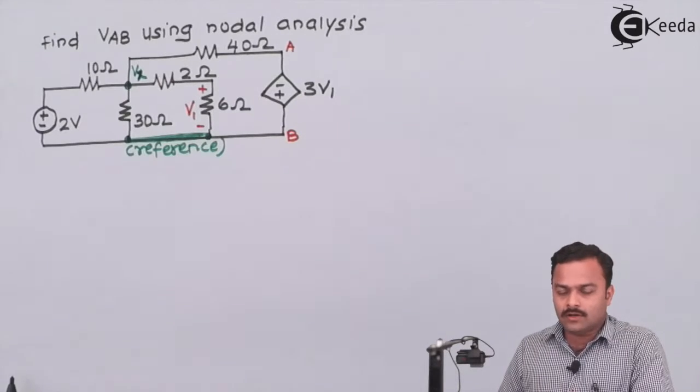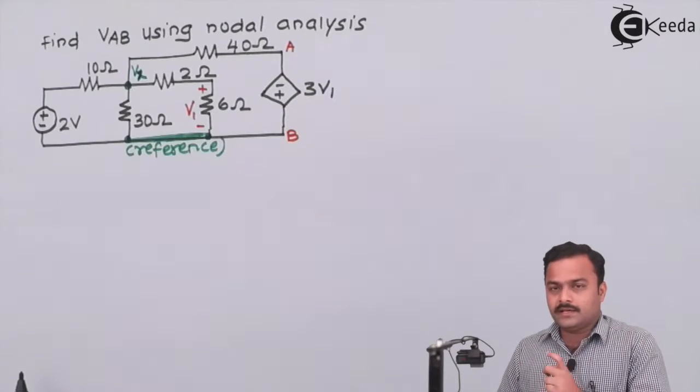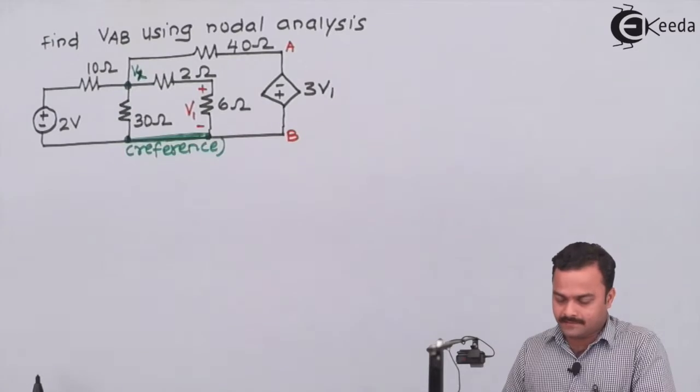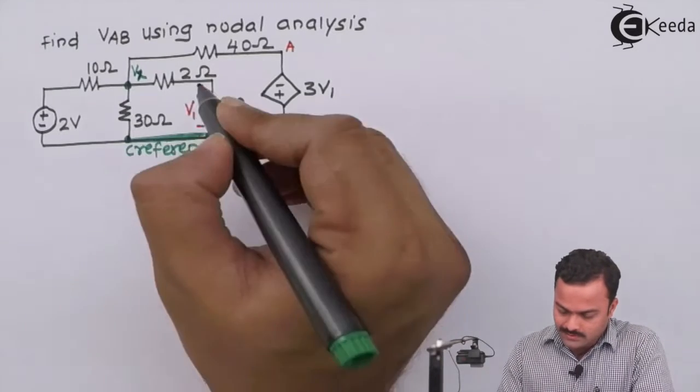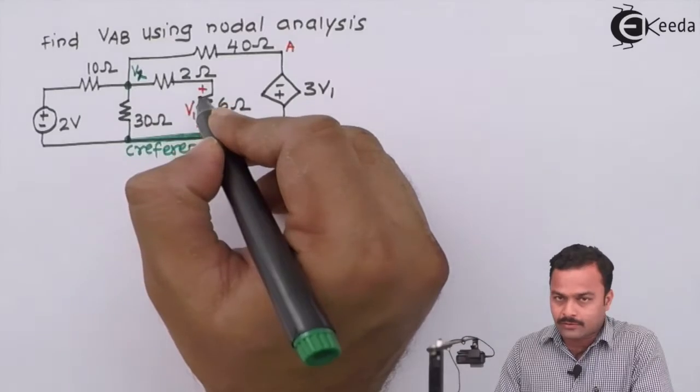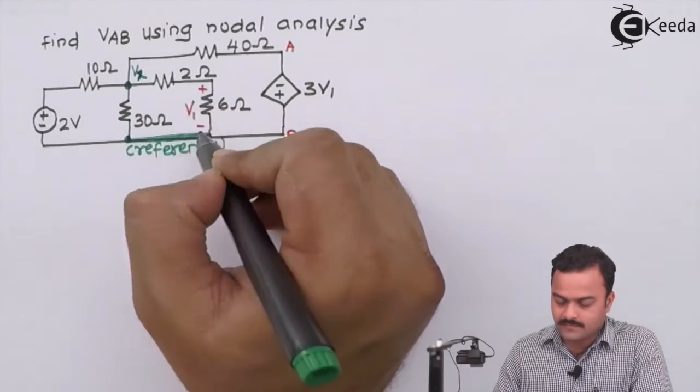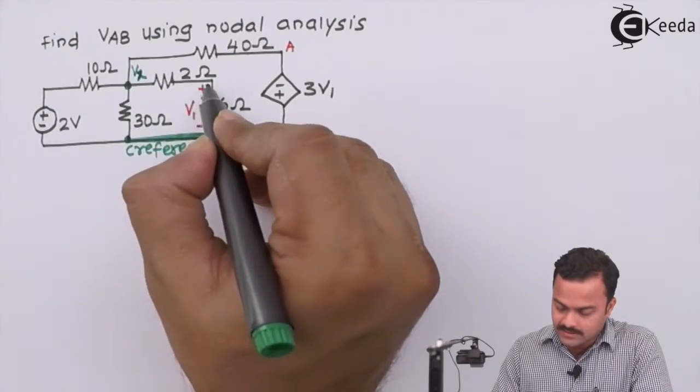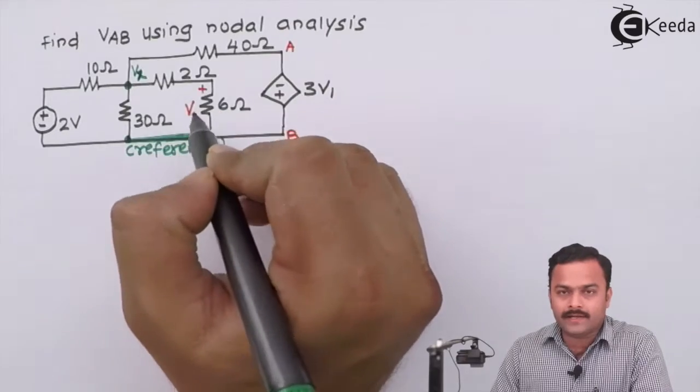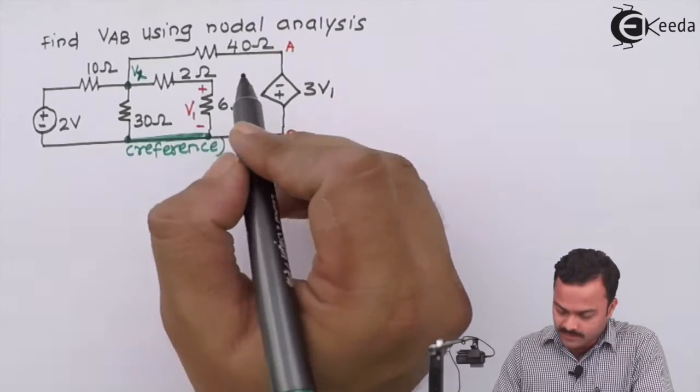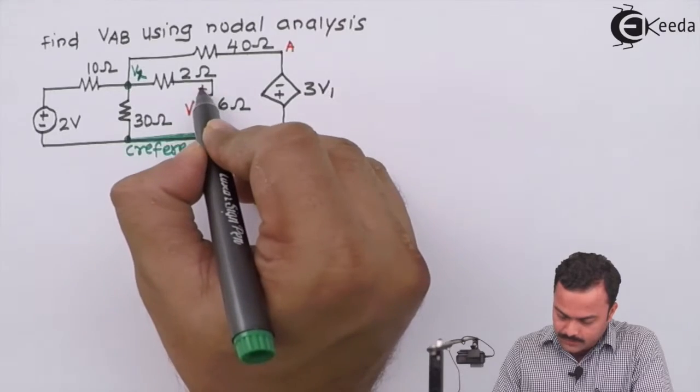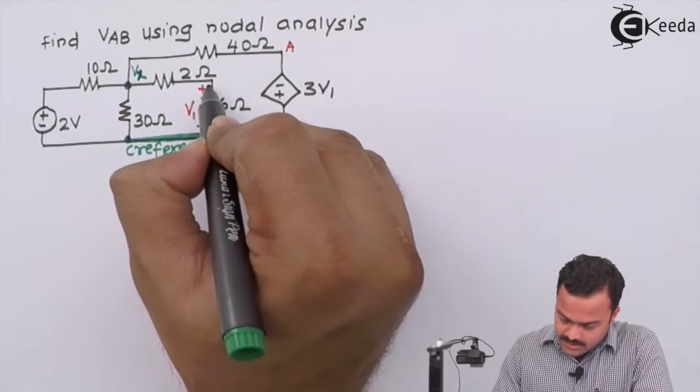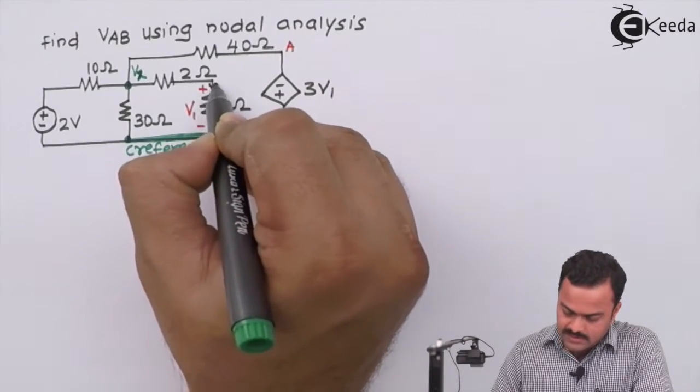Let's mark all branch currents. Now here, we have to take care. While marking the current for the resistor across which voltage is given, we have to mark the current such a way that the polarity will be maintained. What does that mean? If this is a plus and minus is given by them, in order to support this polarity, current has to flow in this direction.